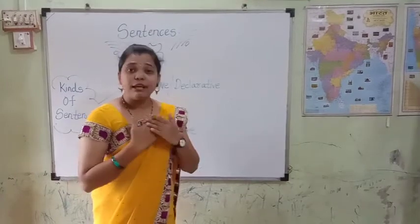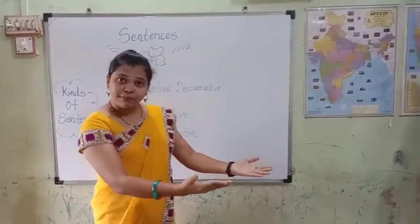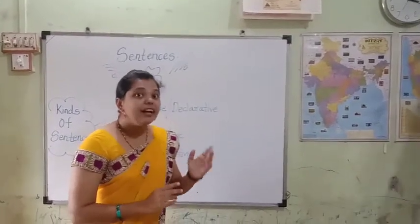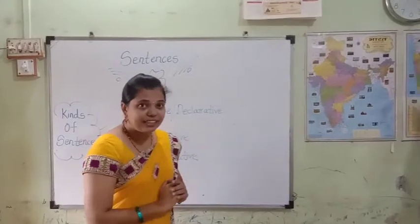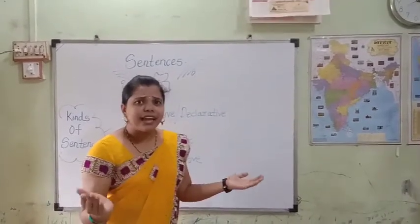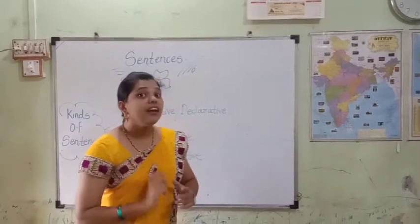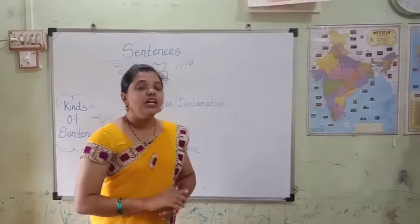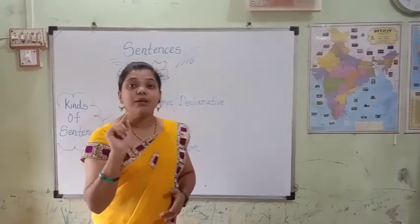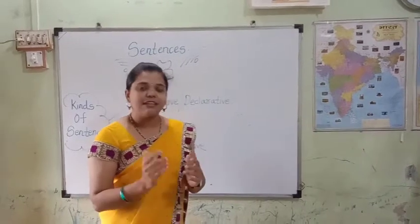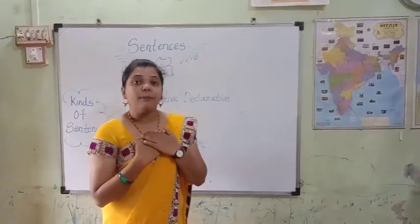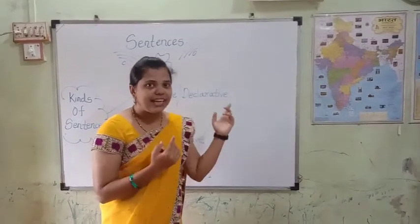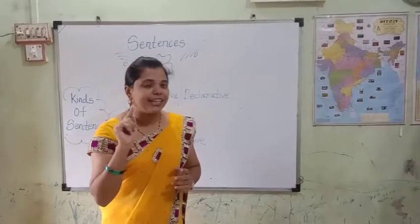Whenever the words no, not, never are not present in the sentence, those sentences are known as affirmative declarative sentences. For example: 'He felt very sad about his friend' — this is an affirmative declarative sentence. Second example: 'He did not care about me' — here 'not' is present in the sentence, so this sentence is known as a negative declarative sentence. 'Today I am going to school' — this is also a declarative sentence, but an affirmative declarative sentence.